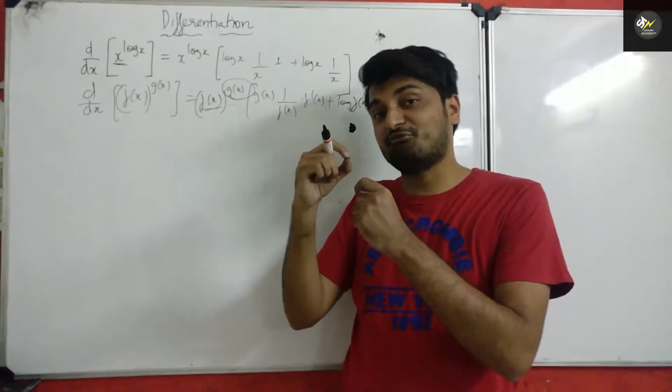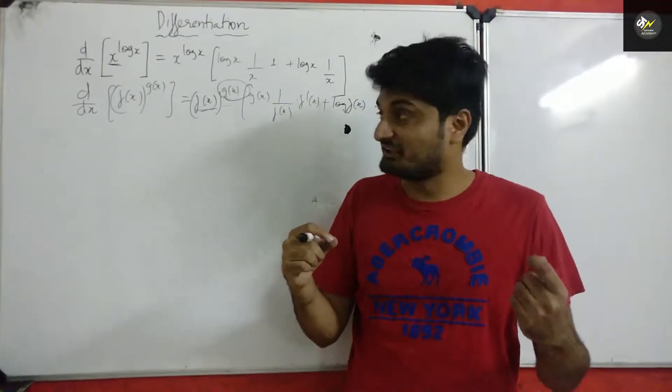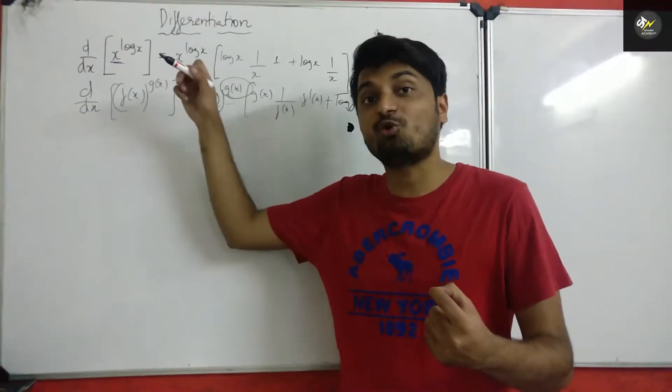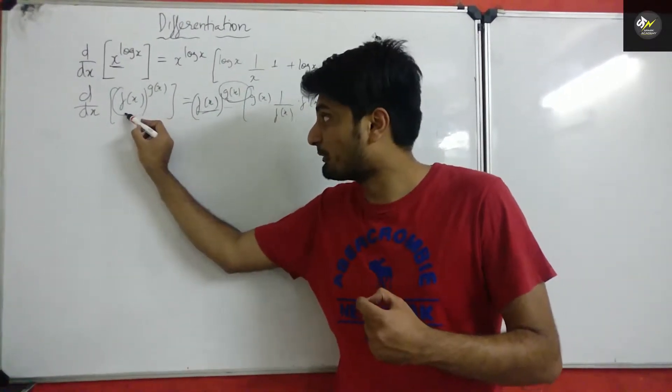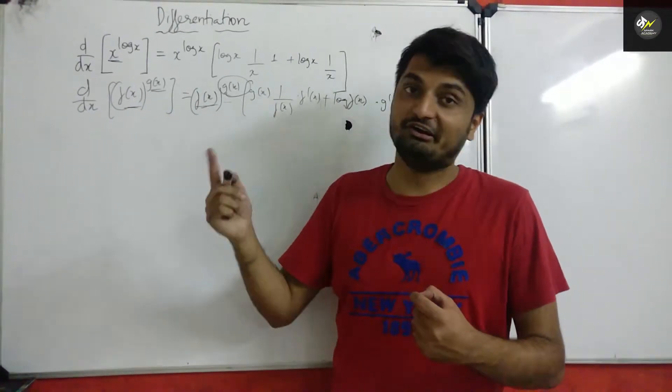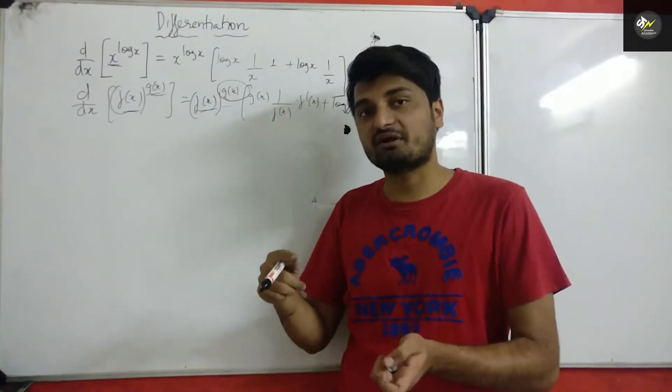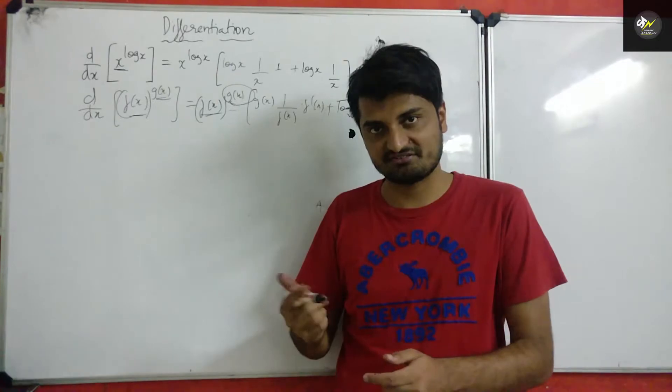Please don't get confused with the previous shortcut which I discussed which was in f of x whole power f of x power. So this kind of shortcut can be applied if your base term and your power term are different terms. So in this way you can solve these kind of questions in less than 10 seconds.